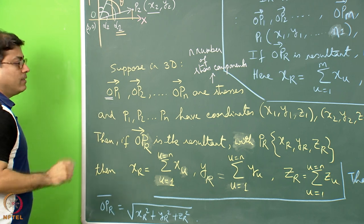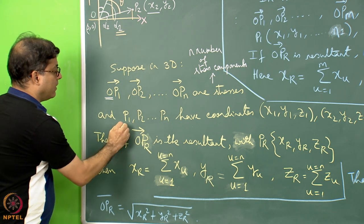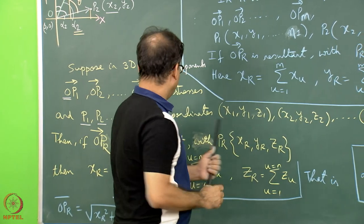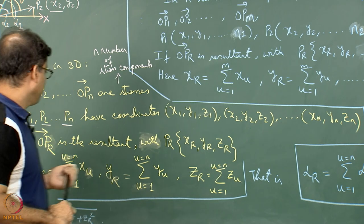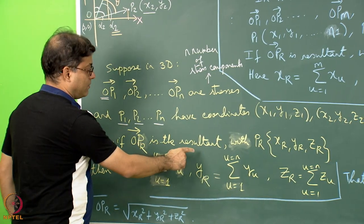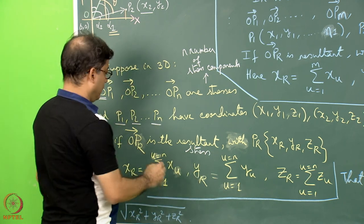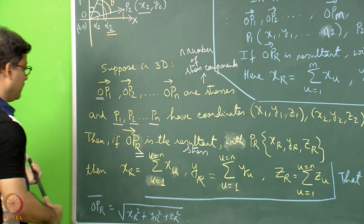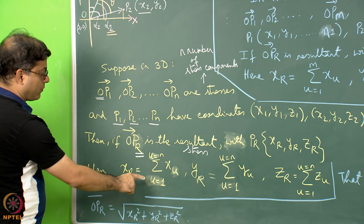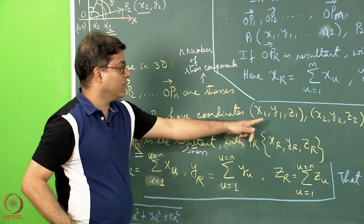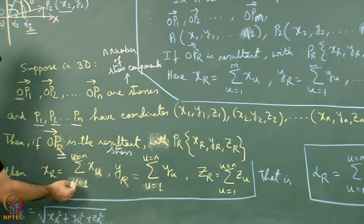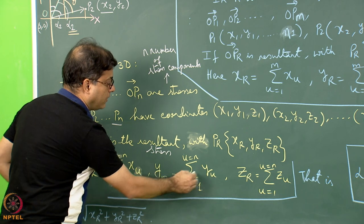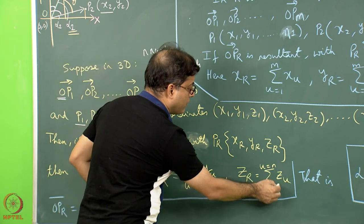O has coordinate (0, 0, 0) as the origin, and the coordinates of P1, P2, up to Pn are (x1, y1, z1), (x2, y2, z2), and for Pn it is (xn, yn, zn). If OPr is the resultant stress with the coordinate of Pr as (xr, yr, zr), then — as with the 2D case — in 3D we can write that xr equals the sum of all x terms: x1 plus x2 up to xn, written as the sum of x_u for u = 1 to n. Similarly, yr equals the sum of y_u for u = 1 to n, and zr equals the sum of z_u for u = 1 to n.